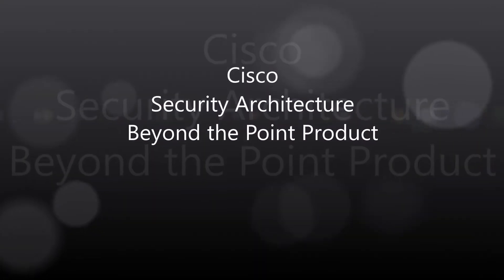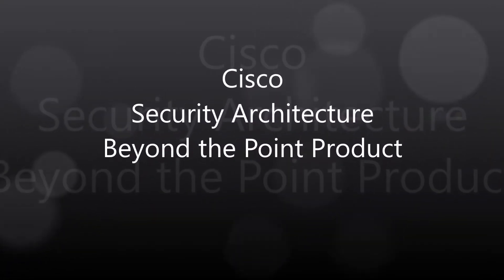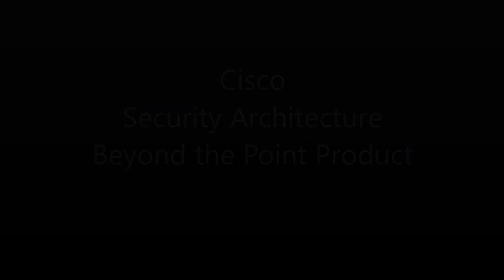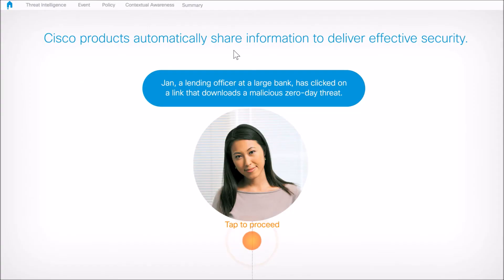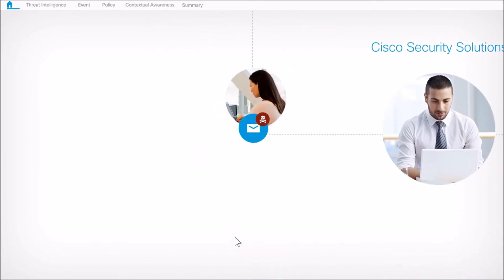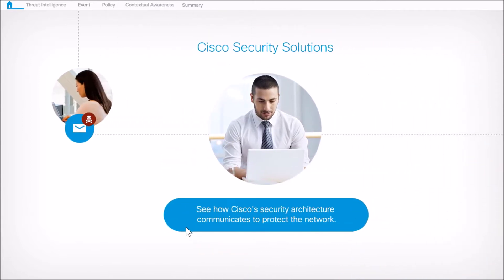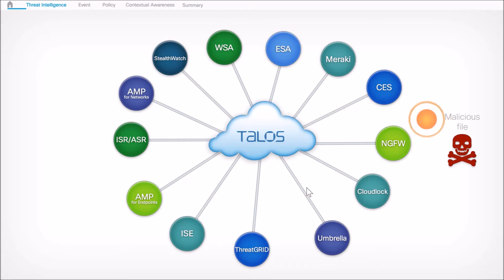Okay folks, here we go — security architecture beyond the point product. We're going to provide you an overview of what Cisco can do today: automatically sharing information to increase the security effectiveness of the portfolio. Let's go through a scenario where a user clicks a link and downloads a file, and we'll show how Cisco's security architecture communicates to protect the network.